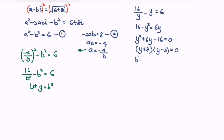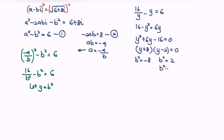So b squared equals negative 8 or b squared equals 2. We ignore b squared equals negative 8 because it is invalid. Therefore we have b squared minus 2 equals 0.